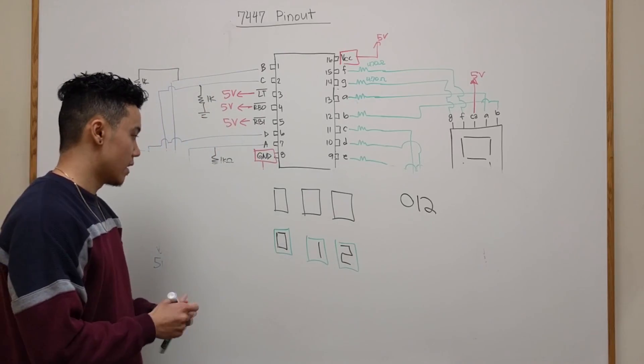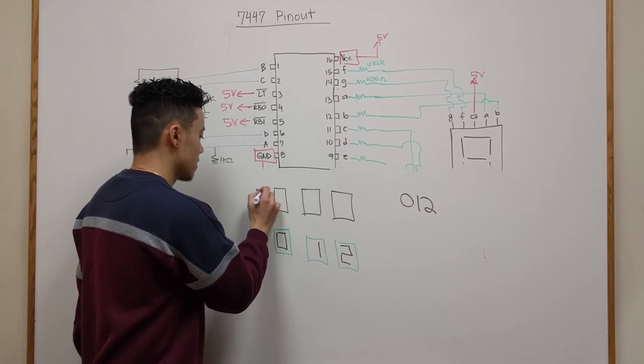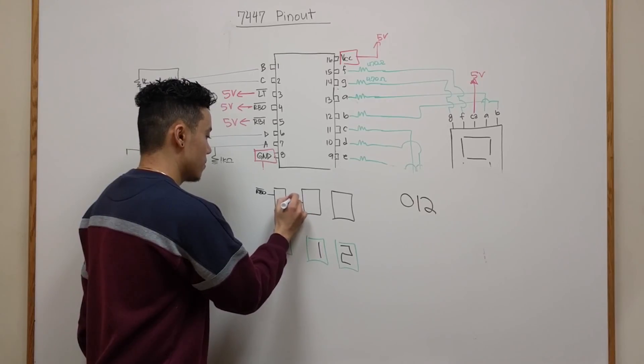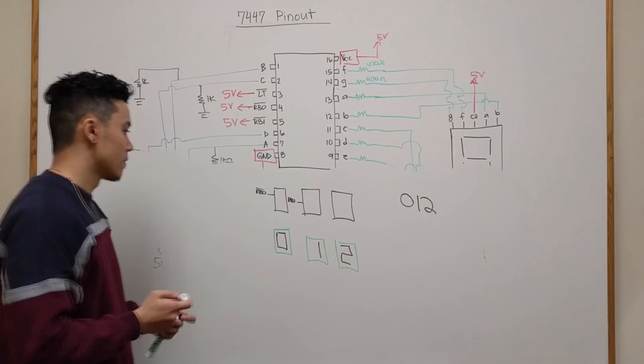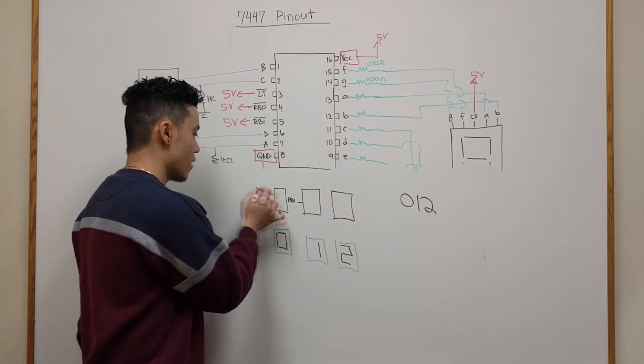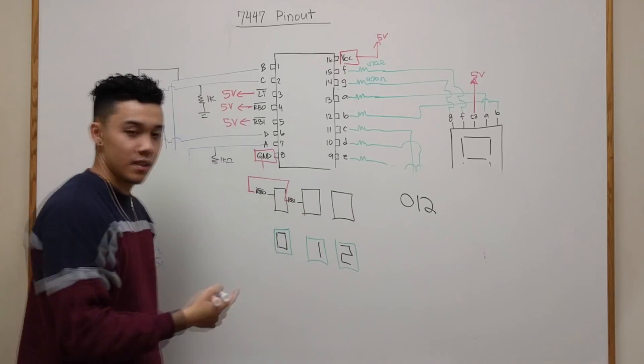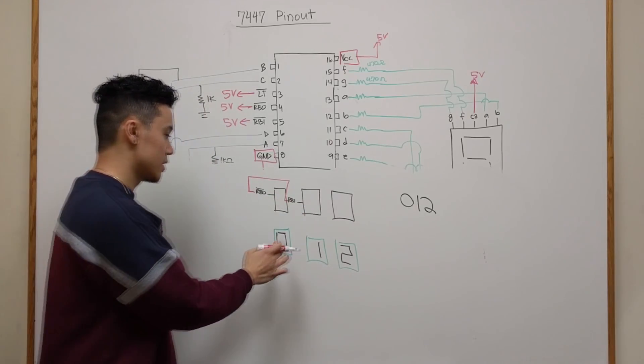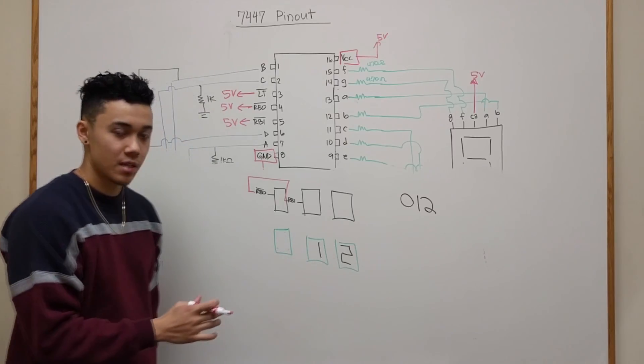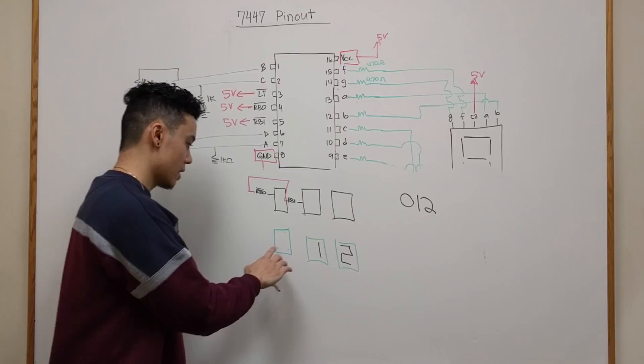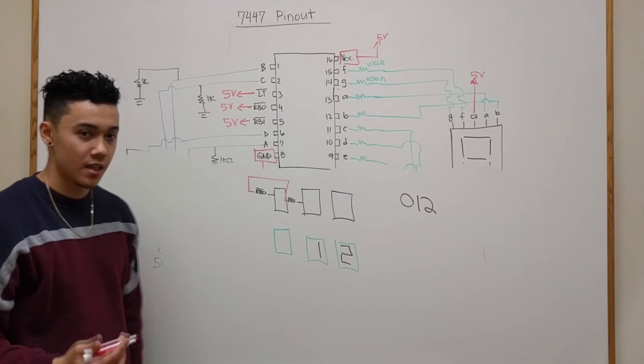And what RBO and RBI does is it suppresses the leading 0. So if you connect your RBO to the RBI of the next chip, what it does is if this is a 0 then it suppresses that 7 segment display. So that way the 0 will not be displayed.